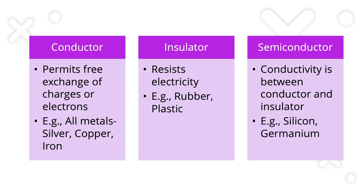Now a simple concept we didn't cover in part 1: conductors, insulators, and semiconductors. A conductor is a material that enables the passage of electricity — for example, metals like iron, silver, and aluminum. An insulator does not allow the passage of electricity — for example, plastic and glass. A semiconductor has conductance lying between an insulator and a conductor — examples are germanium and silicon.